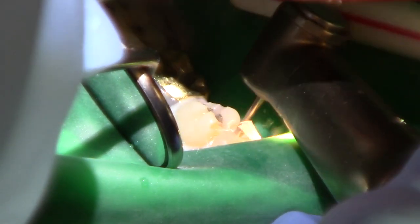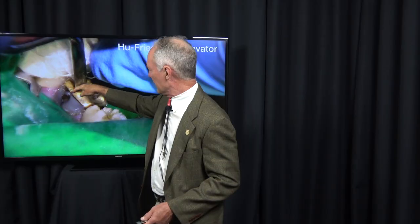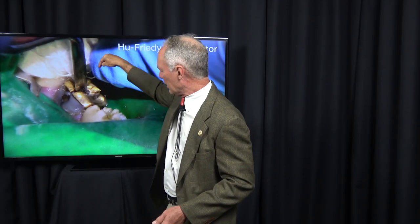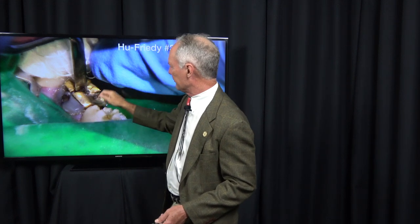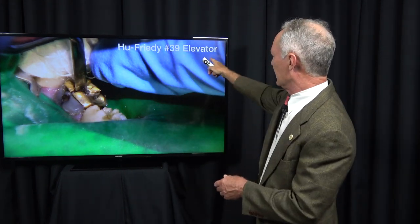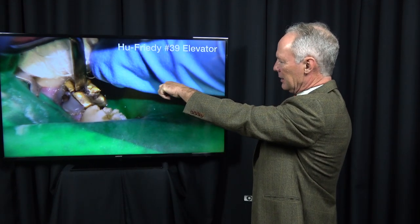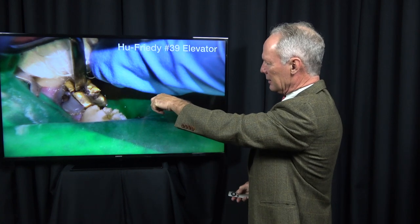Interproximally between the bicuspid teeth, I want to keep the burr in the bicuspid I'm prepping. I do not want to touch the adjacent tooth. I've used that same 330 carbide burr to make a cut all the way through this crown. This is an elevator, a 39 Hugh Freedy.